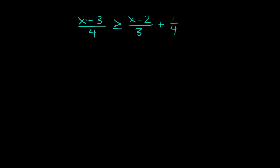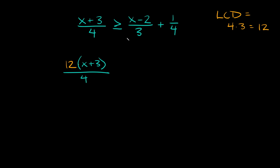Here's the last problem: x plus 3 over 4 is greater than or equal to x minus 2 over 3 plus 1 fourth. Again, we have a bunch of fractions, so the first thing we want to do is find the LCD. We have a 4 and a 3 — those are the only different denominators — so the LCD is 4 times 3, which equals 12. We're going to multiply all of our fractions by 12. So: 12 times (x plus 3), all over 4; greater than or equal to 12 times (x minus 2), all over 3; plus 12 times 1, all over 4.